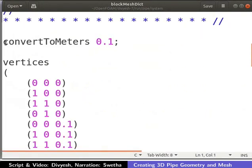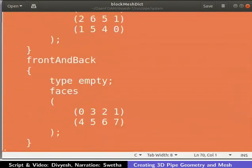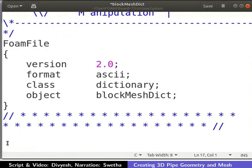Delete the lines from convertToMeters to the end of the file as shown here. The remaining content is common for all blockMeshDict files.